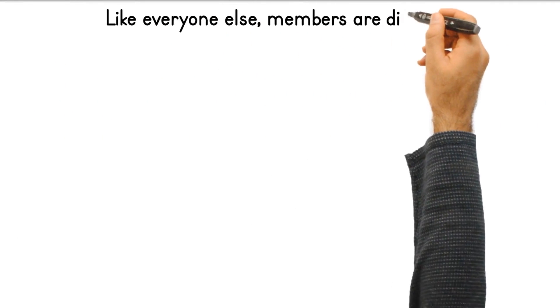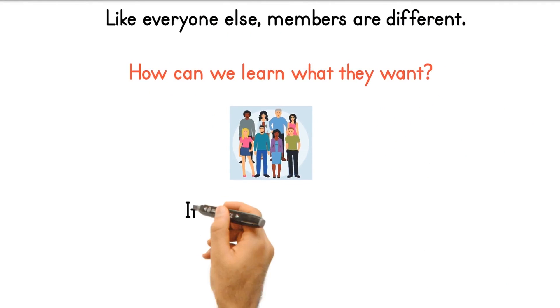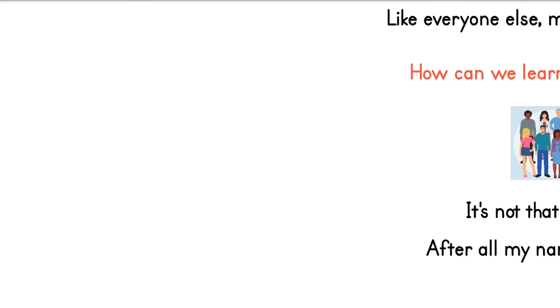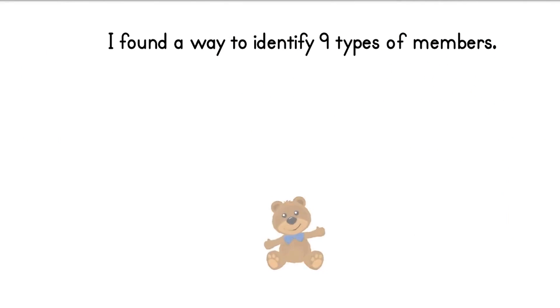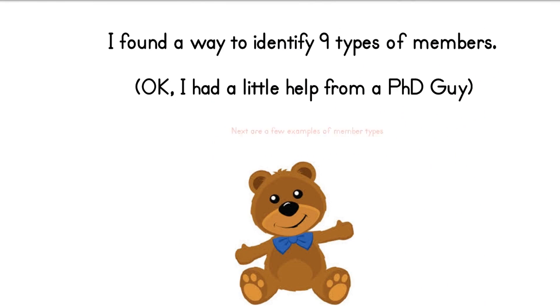Like everyone else, members are different. How can we learn what they want? It's not that difficult. After all, my name is SegMo. I found a way to identify nine types of members. Okay, I had a little help from a PhD guy.